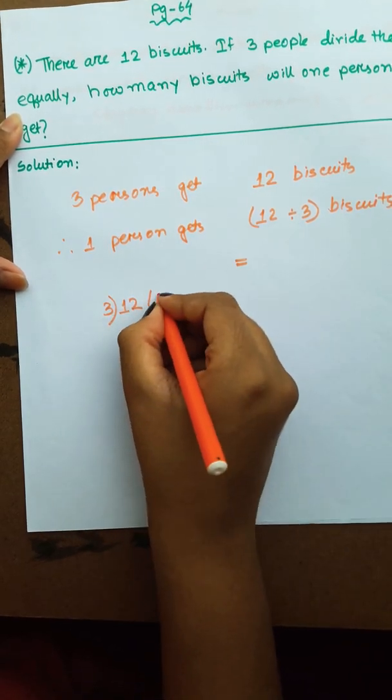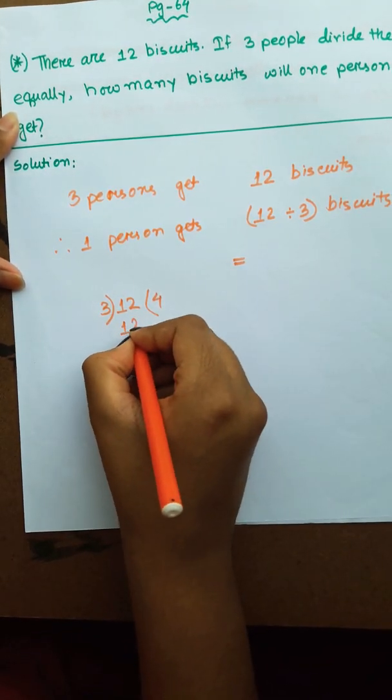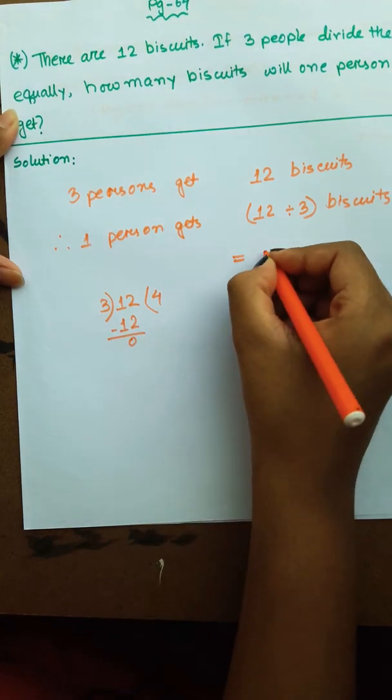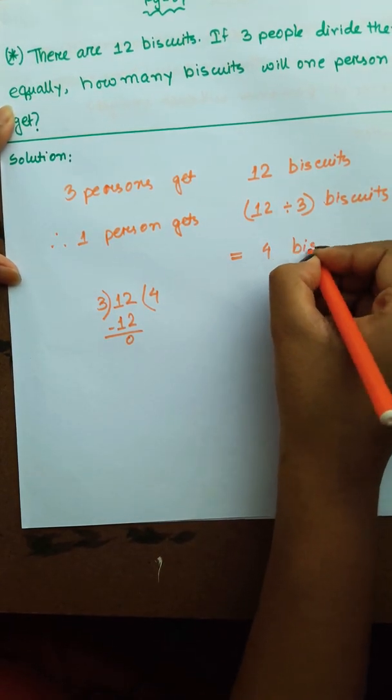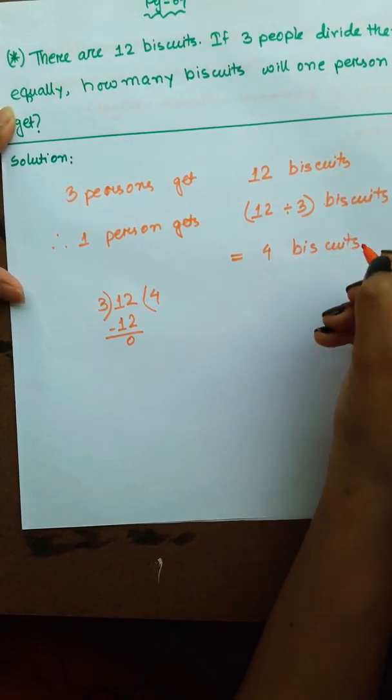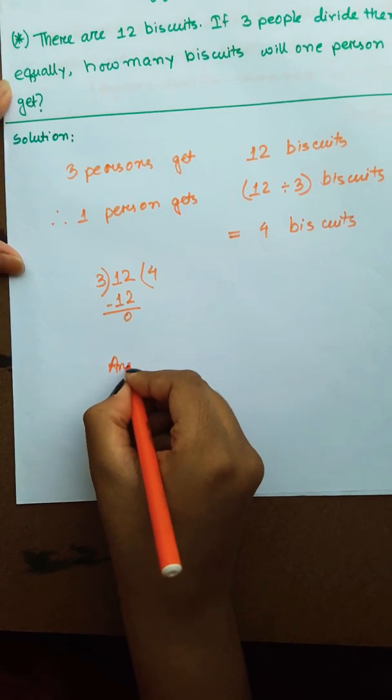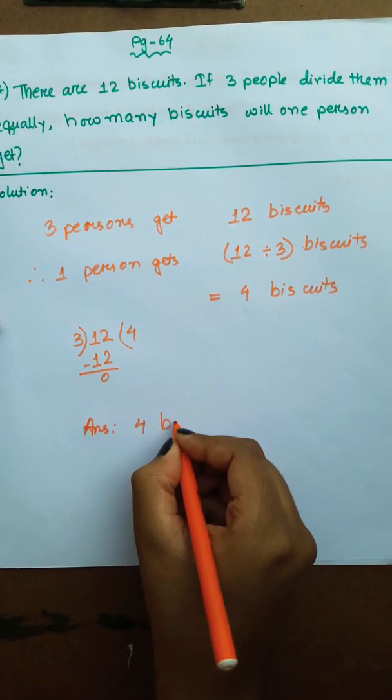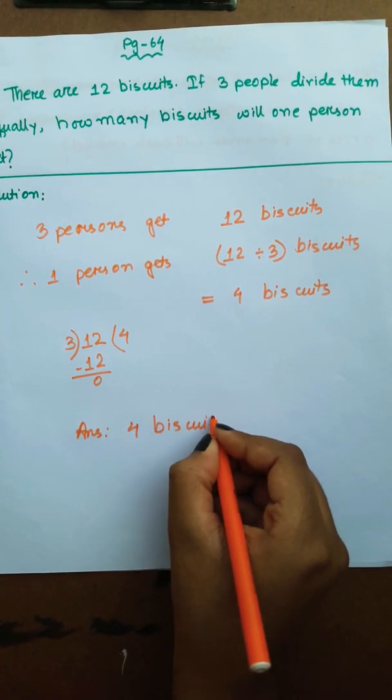We know three fours are twelve. Therefore, 4 biscuits. So answer is 4 biscuits.